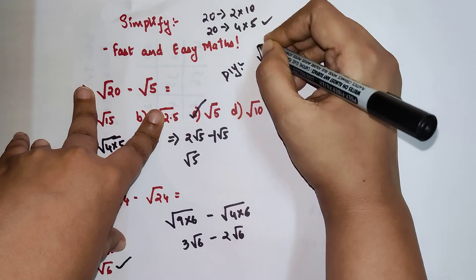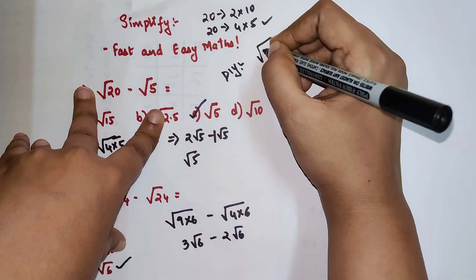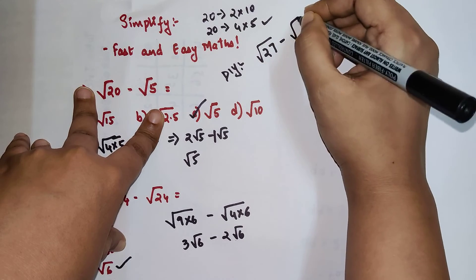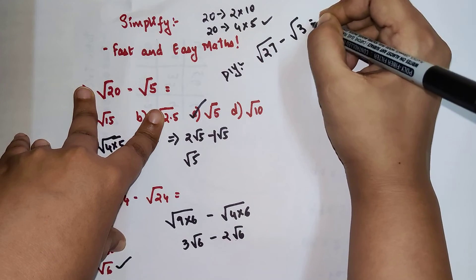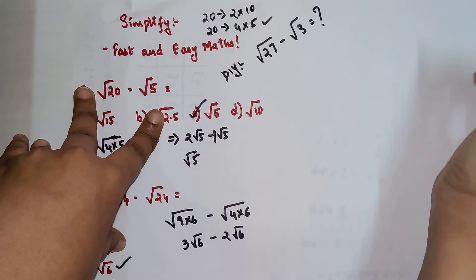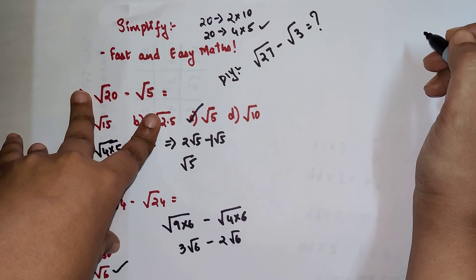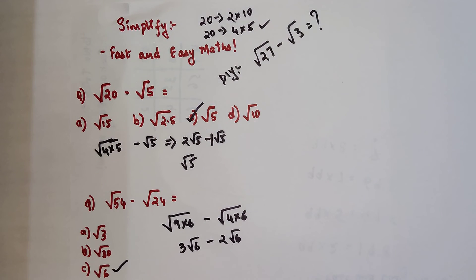So now we have root 27 minus root 3. Do let me know your answers in the comment section. That is it for today — I will see you in the next video.